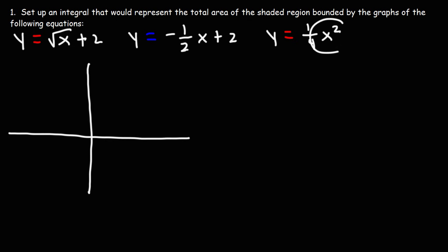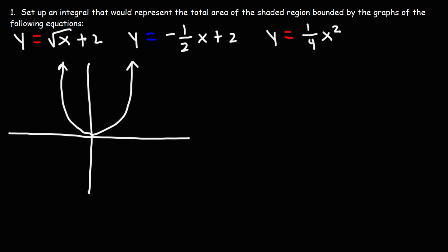So y equals x squared — we know it's a graph that opens up. Now because there's a one-fourth in front of the x squared, and because it's less than one, the graph is going to open in a much wider fashion. So instead of being narrow, it's going to be wider.